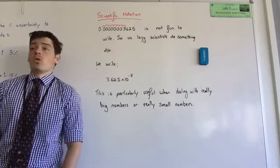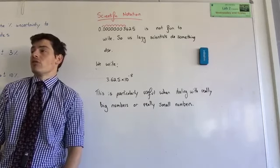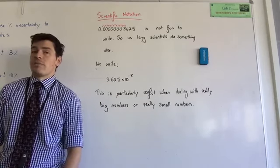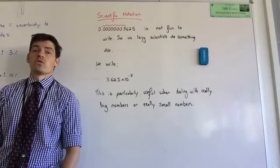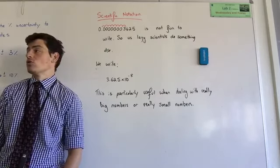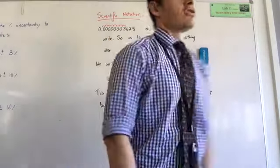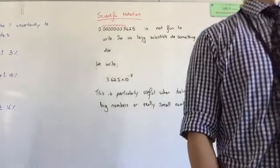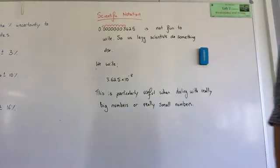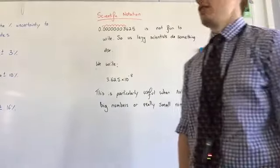In science and particularly in physics we like to deal with really really big and really really small numbers. So we talk about the mass of an electron, the speed of light, those sorts of things we are dealing with massive and tiny numbers all the time. And I don't know about you, but I get pretty sick of writing numbers like 0.000000003625 and your reports will become cumbersome if you have to do that.